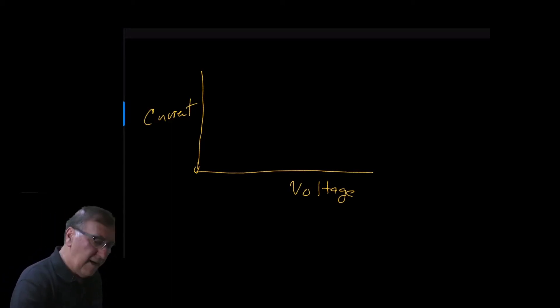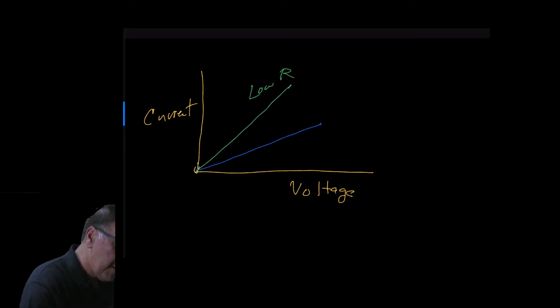If we have low resistance, it would look something like this, low R. But it is a linear relationship between voltage and current by the equations. And if we have a high resistance, it would look something like this, high R.